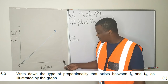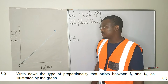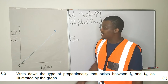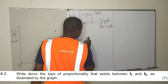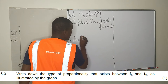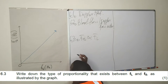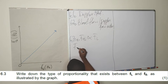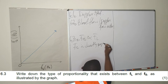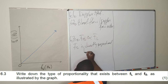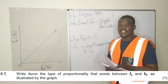6.3 asks for the type of proportionality that exists between the frequency of the listener and the frequency of the source. You can see that as we increase the frequency of the source, the observed frequency increases as well, and they're increasing at the same rate. So these two are directly proportional. We can say the frequency of the source, Fs, is directly proportional to the frequency of the listener, Fl.